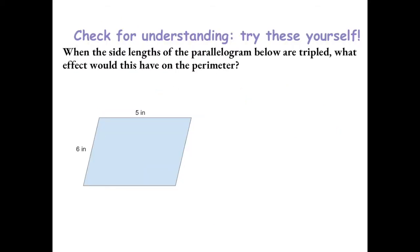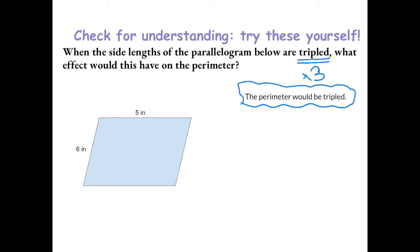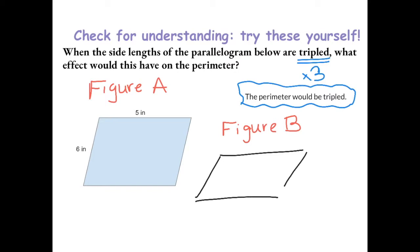When the side lengths of the parallelogram below are tripled, what effect would this have on the perimeter? Try this one yourself to check for understanding.